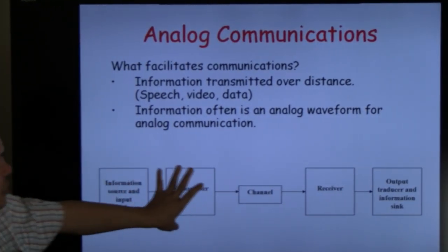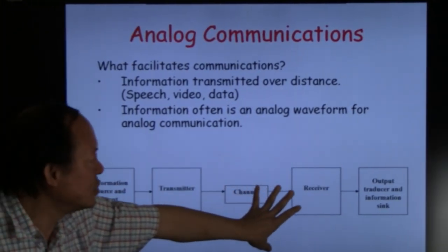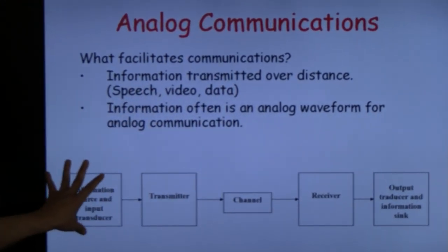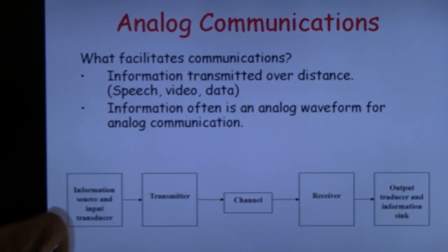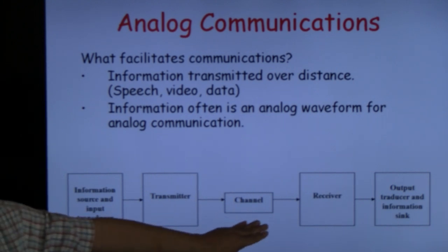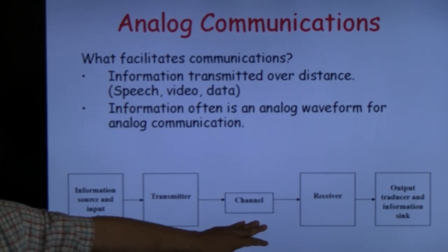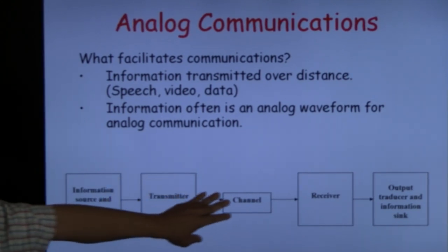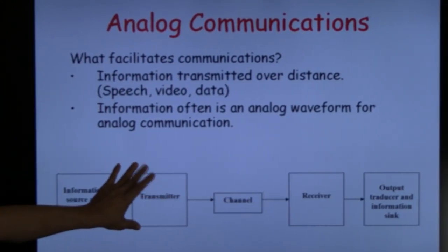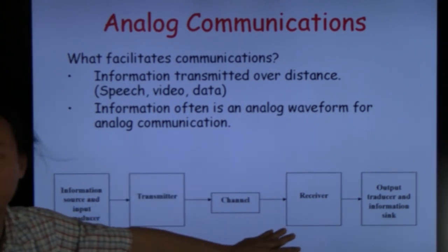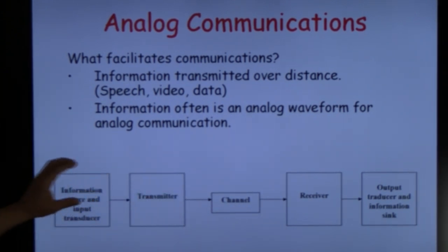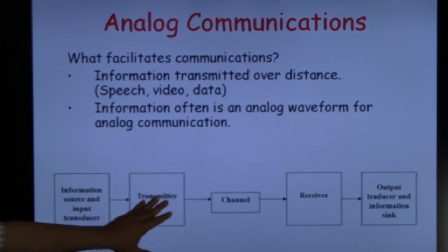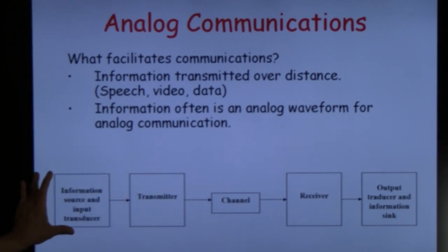Here we have a block diagram that details for analog communication the different components in the entire communication system. First you have the communication channel, for example a pair of copper wire. Then before the communication channel you have a transmitter, and on the other hand you have a receiver.